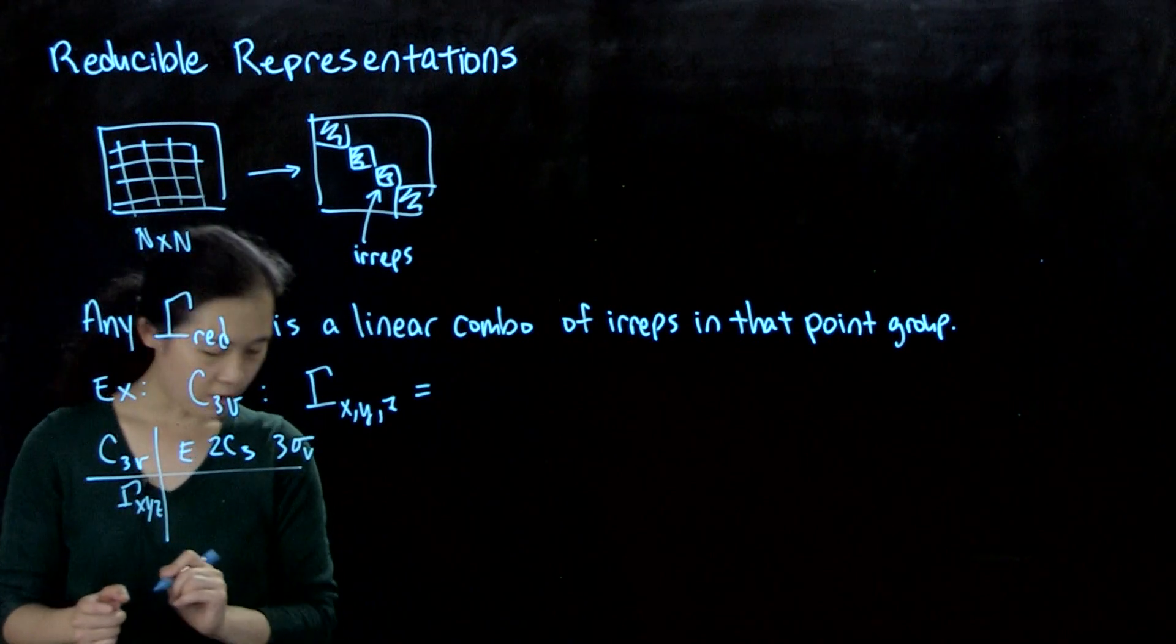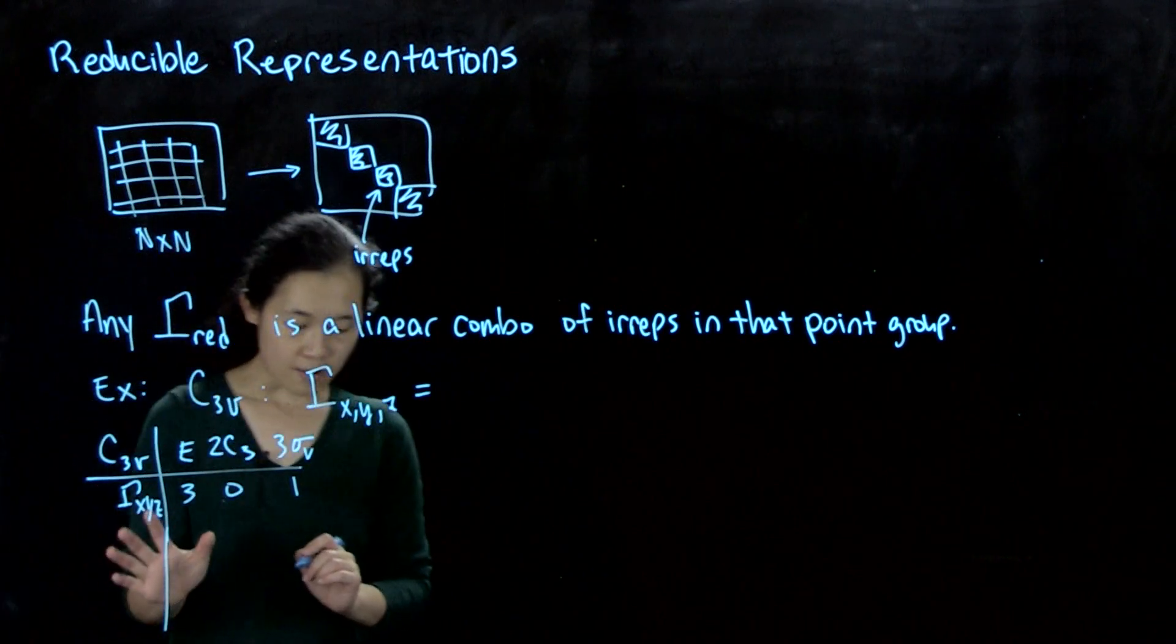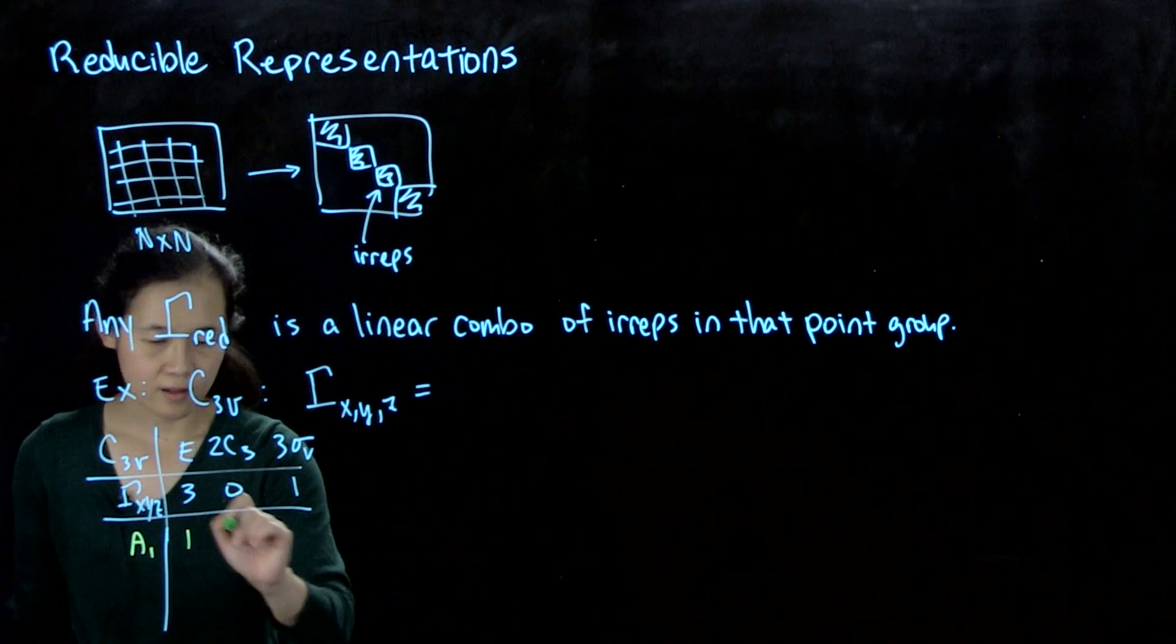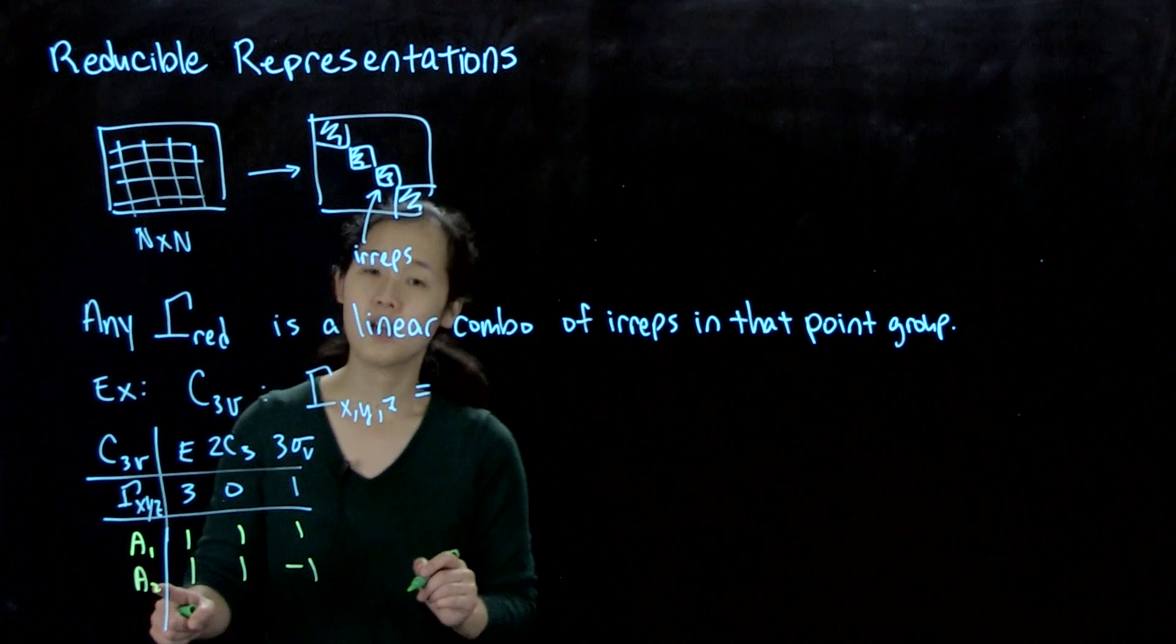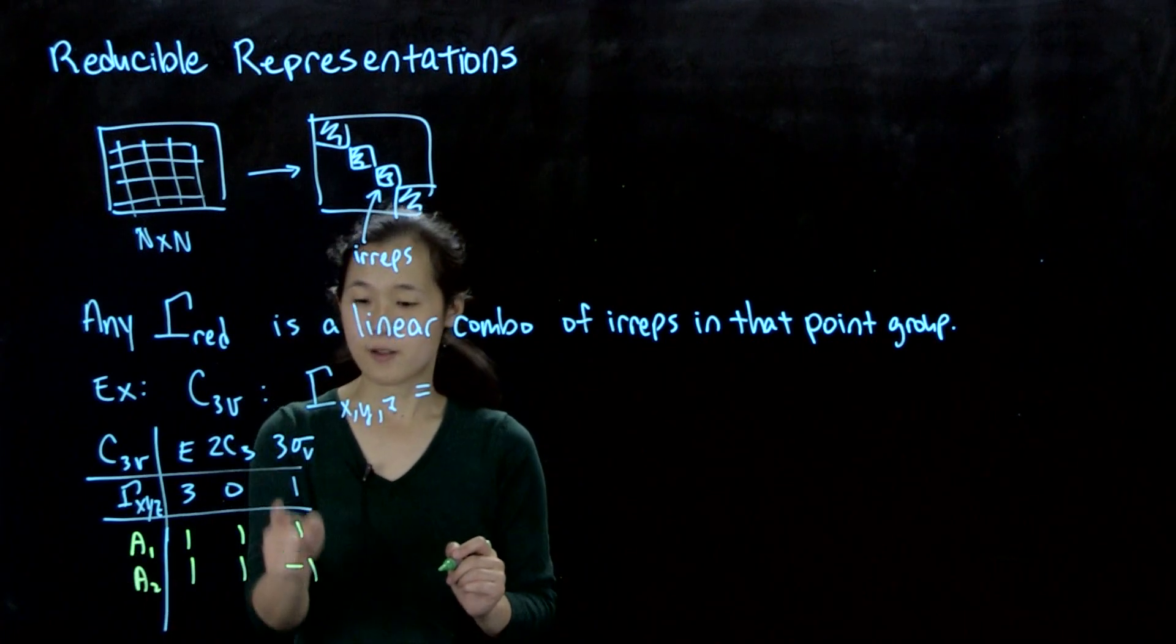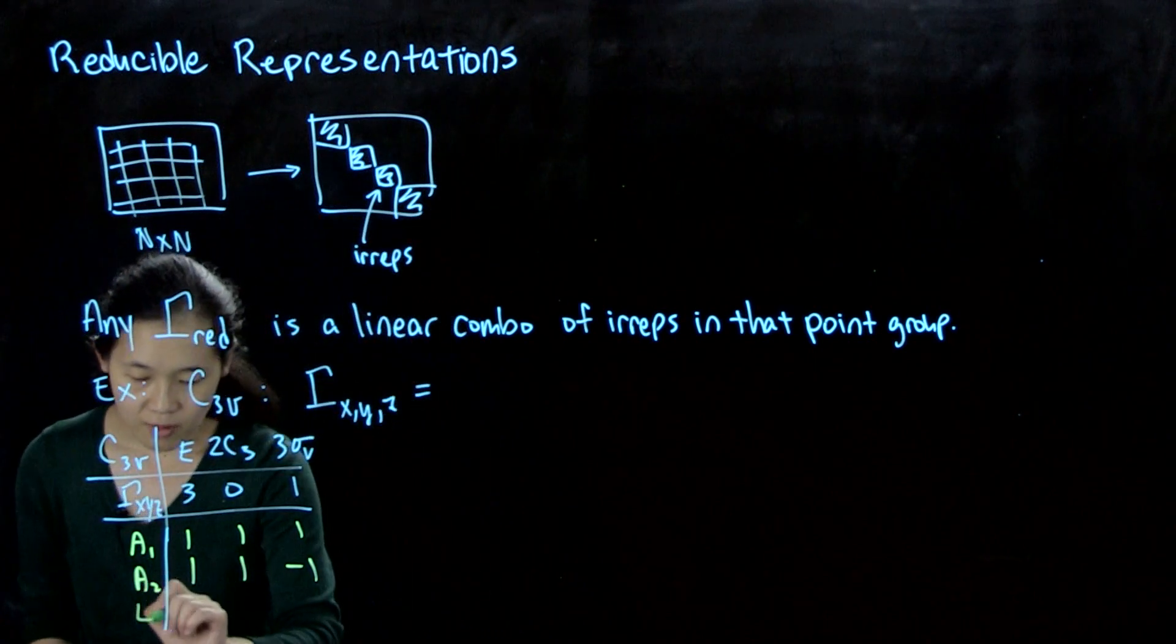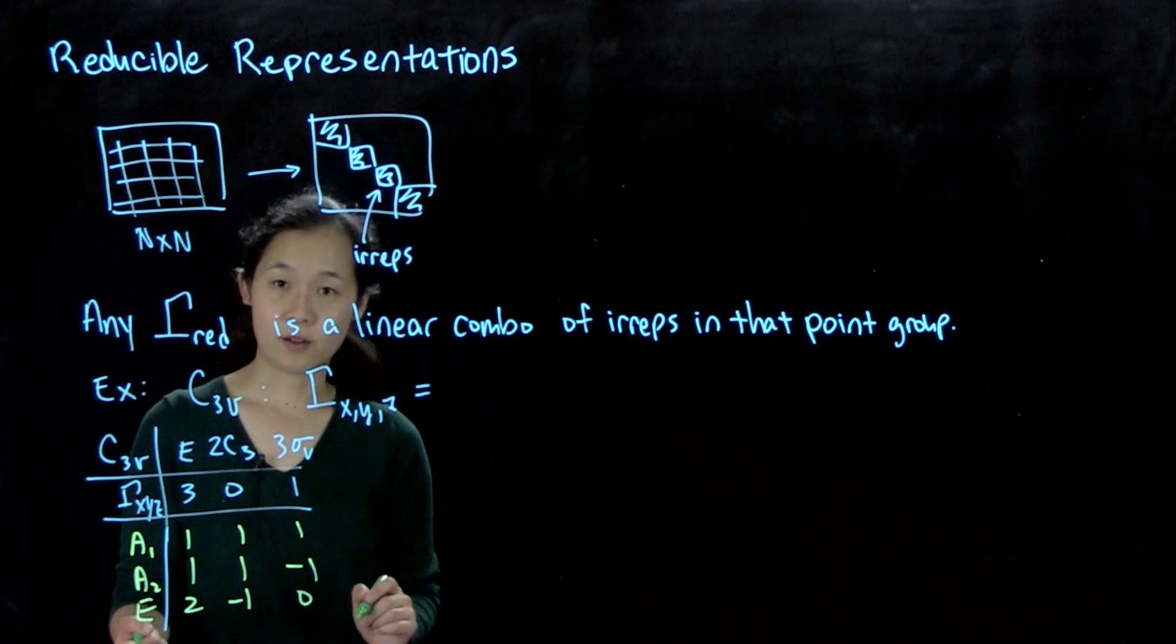I'm going to redraw the character table here. This was our reducible representation, but from the character table we knew that a1 is one irrep, a2 is another one: 1, 1, minus 1. The 2 in the subscript of this Mulliken symbol for a2 means it's anti-symmetric with respect to sigma v. Because it's plus 1 under C3, it's an a rather than a b. Our last irrep was 2, minus 1, 0. This 2 means it's an e symmetry irrep.